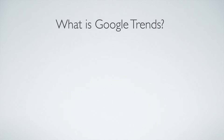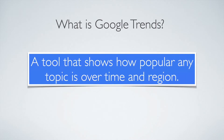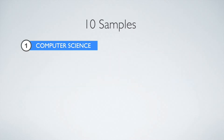So what is Google Trends? It's a tool that shows how popular any topic is over time and region. And the best way to learn how to use it is by giving you examples. I have 10 examples on different areas that you could be teaching on.